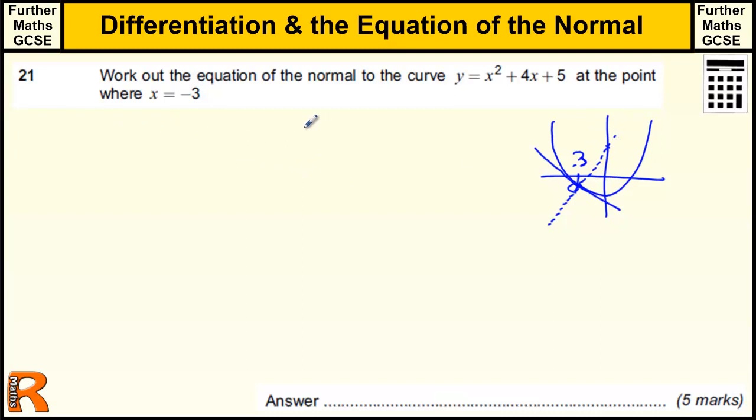So to find the gradient of the normal, what we're trying to do is use y equals mx plus c to get the equation of the normal. So we need to find the gradient, which comes from this bit, and then from this bit, and then we need to find the c by substituting values in.